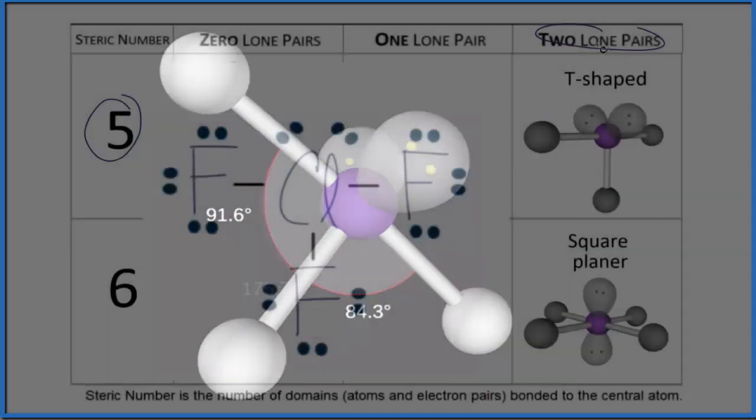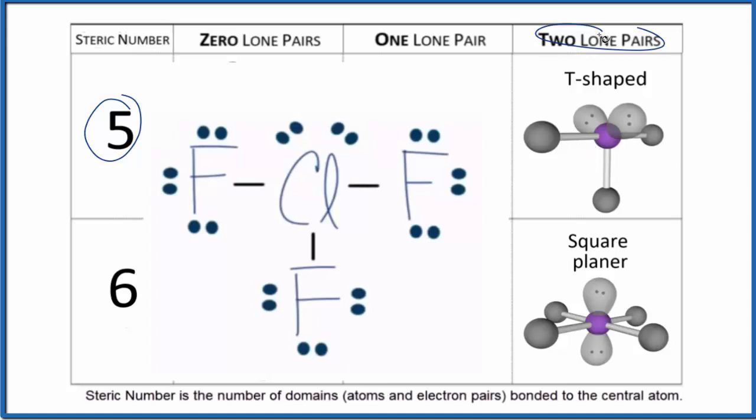Let's go back. So we have our five things attached, three atoms, and then the two lone pairs here. That's the T-shape.